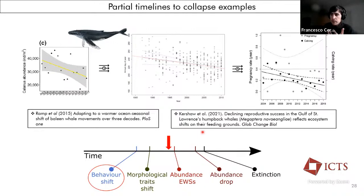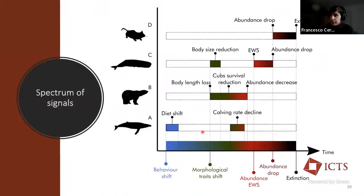So in addition to that, there are several partial timeline examples in the literature, because there is a whole spectrum of signals from the individual to the population level that we can observe. But we highlighted the ones that are more likely to occur and that are more easily detected with the current monitoring tools that we have.